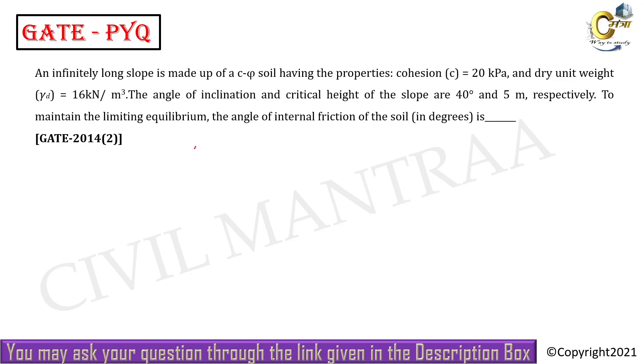For c-phi soil, we know that Sn equals c by gamma Hc, where Hc is the critical height. Now Sn is the Taylor stability number.